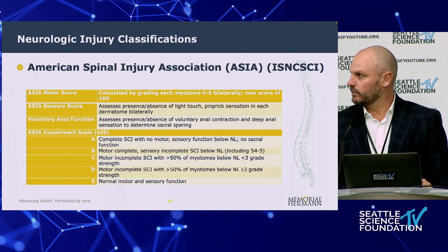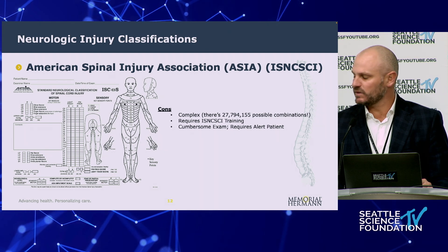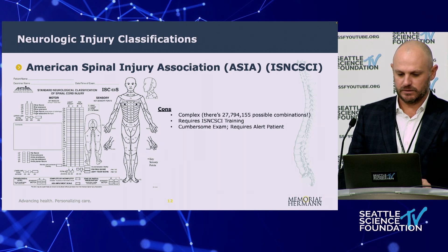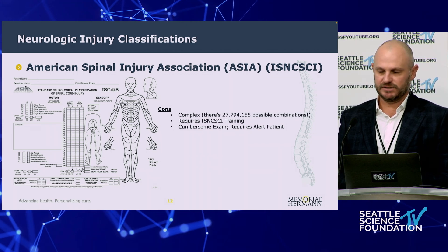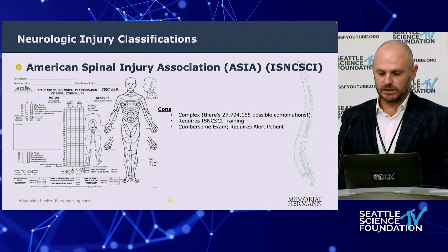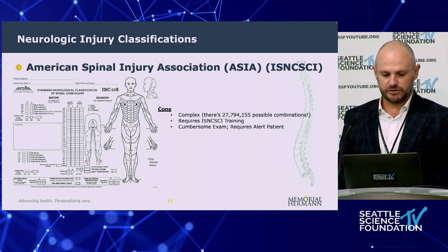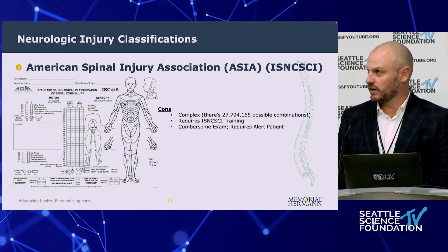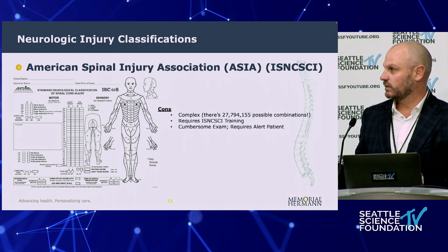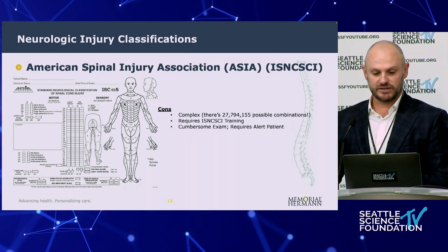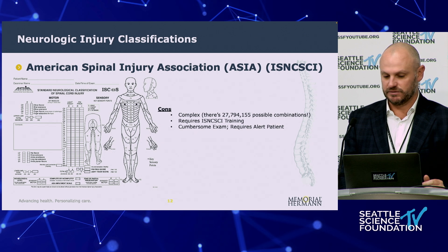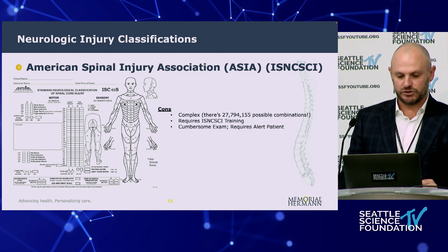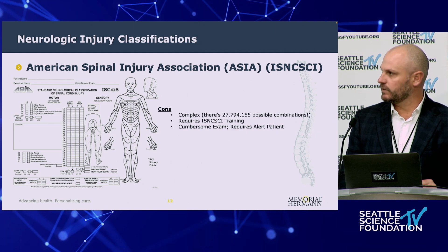Dr. Hofstadter went over some of the basics of the ASIA system. A pro is that it's very granular, providing a lot of very useful data going myotome by myotome on these patients, as well as examining their sensory function. But it is complex. When you look at all the possible combinations you can achieve in the ASIA score, it's something like almost 28 million different combinations that you can achieve in the worksheet.